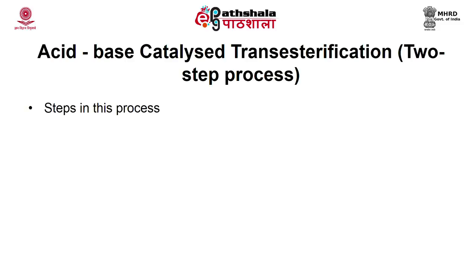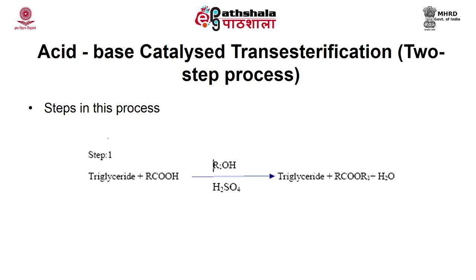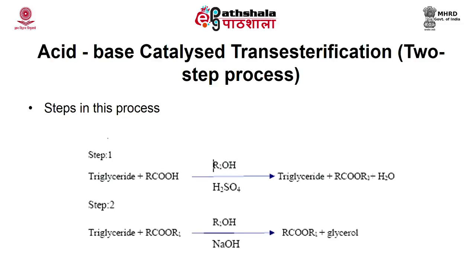The major drawback of the two-step process is the requirement of extra separation stages, washing, and catalyst removal in both steps. The acid catalyst from the first step can be removed by base neutralization, but this adds extra cost. The efficiency of biodiesel production is improved because full utilization of FFA is achieved.